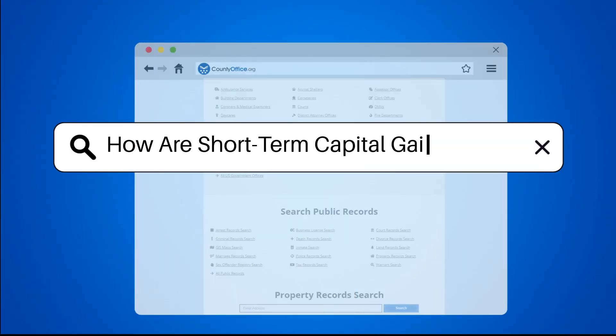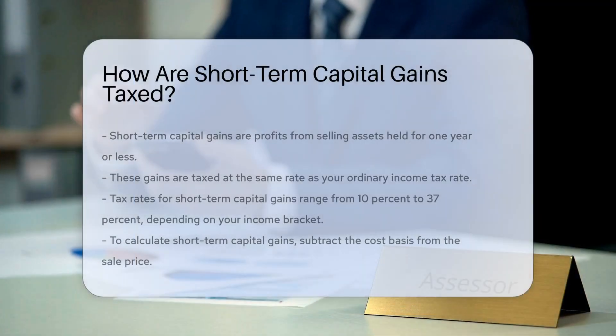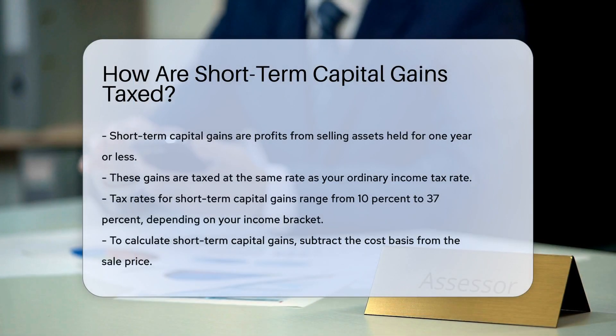How are short-term capital gains taxed? Short-term capital gains are profits from the sale of assets held for one year or less. These gains are taxed differently from long-term capital gains.